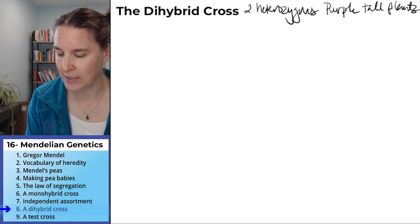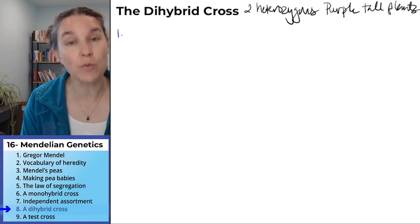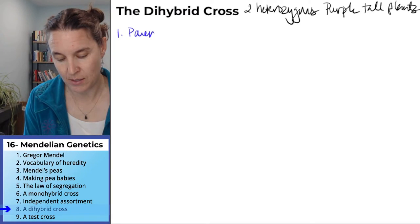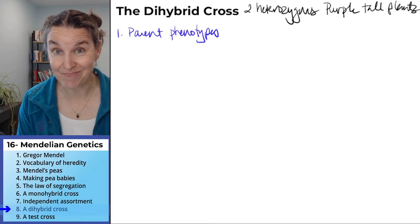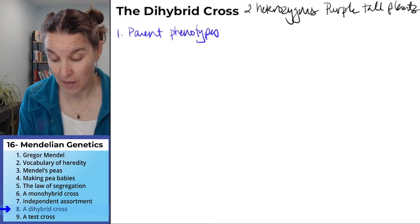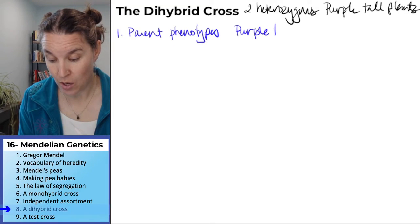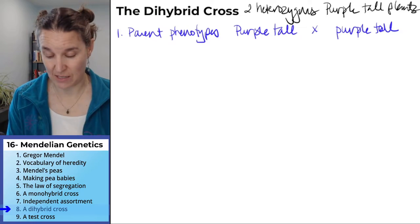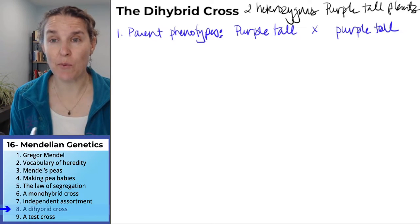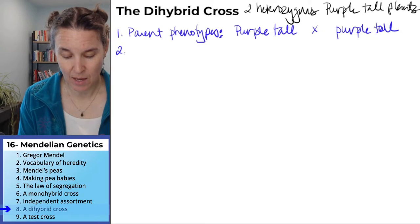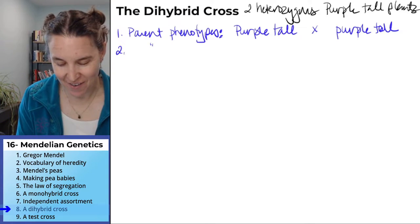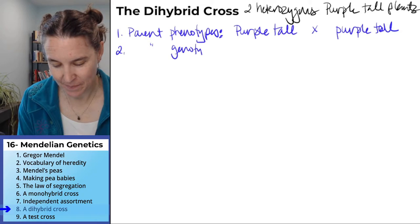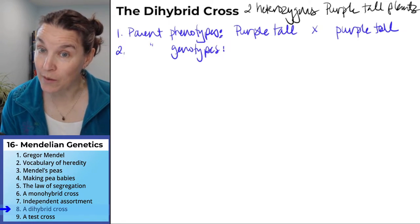And we're going to go through our little steps. First step was what? We're going to do parent phenotypes. And both parents are the same. They're purple tall. That was easy, mostly because I wrote it down for you above there. Now, what are their genotypes?